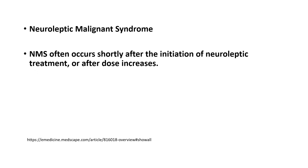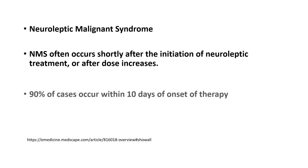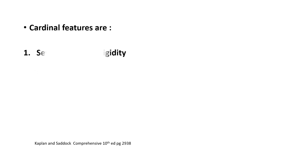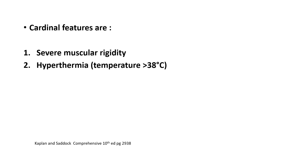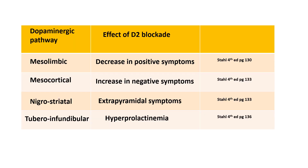Neuroleptic malignant syndrome can occur within 10 days of onset of therapy; its cardinal features include severe muscle rigidity and hyperthermia. In summary, first-generation or typical antipsychotics reduce positive symptoms, but they can increase negative symptoms, produce extrapyramidal symptoms, and cause hyperprolactinemia.